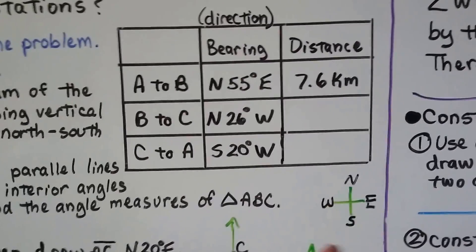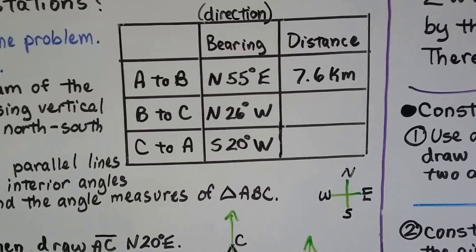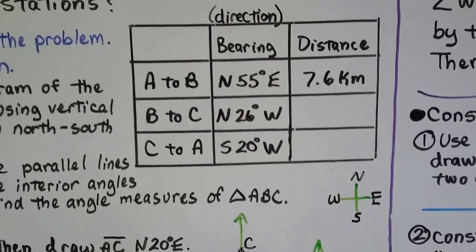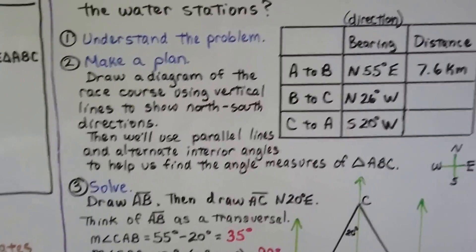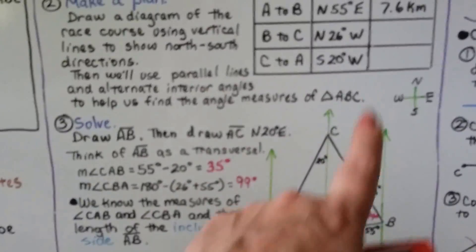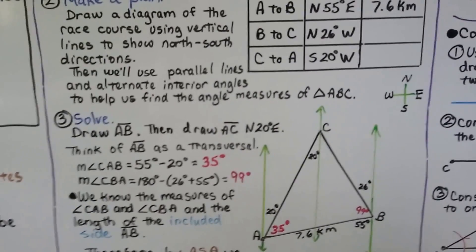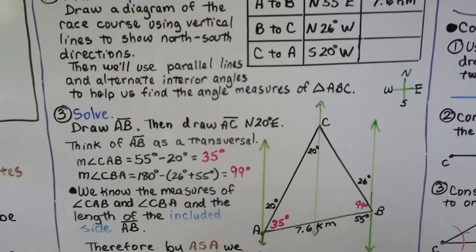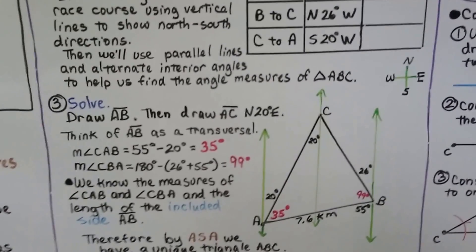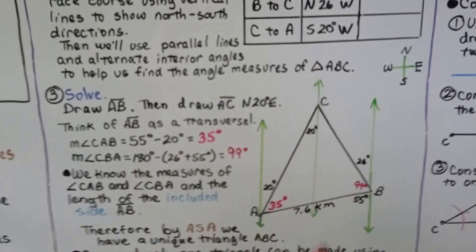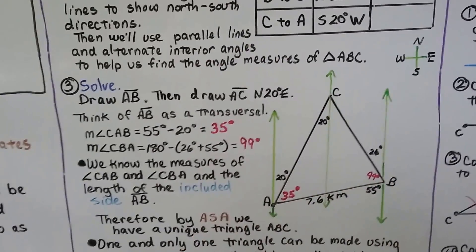On a compass, north is up, south is down, and it spells W-E as it goes across. So we make a plan. We draw a diagram of the race course using vertical lines to show north-south directions. We'll use these parallel lines as alternate interior angles to help us find the angle measures of triangle ABC. By using these parallel lines, we can have alternate interior angles and think of one as a transversal.